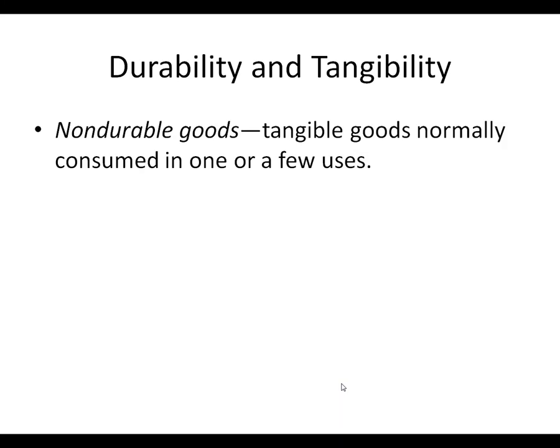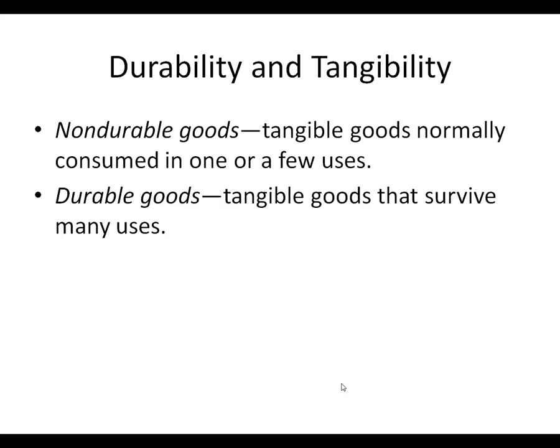When we think about products, we think about durability and tangibility. Non-durable goods are tangible goods normally consumed in one or a few uses — a sandwich is an example, or a band-aid. Durable goods will survive many uses — washing machines, refrigerators, cars, computers. Goods are tangible; services are intangible. Within goods, some are durable and some are non-durable.